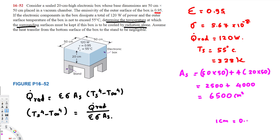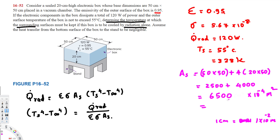Now we need to convert from centimeters squared to meters squared. One centimeter equals 0.01 meters, so one centimeter squared equals 10 to the power of minus 4 meters squared. Moving four decimal places, 6500 centimeters squared becomes 0.65 meters squared. That is our surface area.